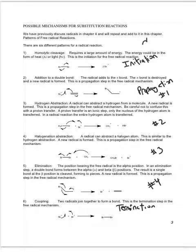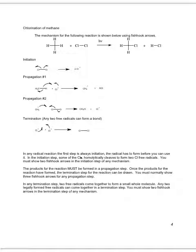Here we have the first of the possible mechanisms: the chlorination of methane. We have methane and chlorine gas reacting with light (hν) to form chloromethane and hydrochloric acid. In the initiator — the first step — we have the bond breaking between the two chlorines to form the chlorine free radical, and then we propagate the reaction. All of the propagation steps have a small whole molecule and a free radical reacting together to form a new small whole molecule and a new free radical.